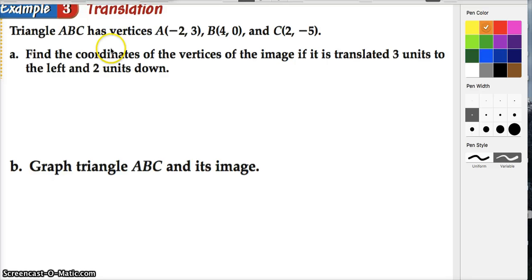Here we got a translation in example 3. Triangle ABC has the following vertices. Find the coordinates of the vertices of the image if it is translated 3 units to the left and 2 units down. If we're going 3 units to the left and 2 units down, instead of adding on, we're actually going to be subtracting. A prime is going to be (-2, 3). If I start at -2 on the x-axis, and I'm going to translate 3 units to the left, I'm actually going to subtract 3. So -2 minus 3 is going to be my x-coordinate of my A term. And then positive 3, now I'm going down, minus 2 is going to be the y term.